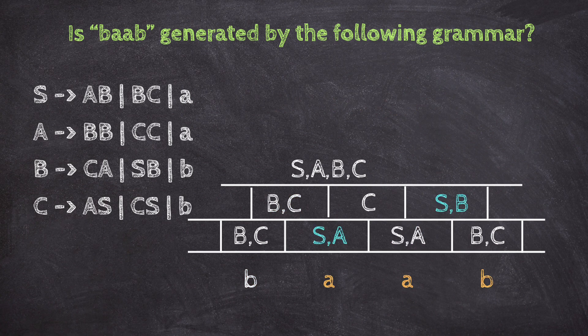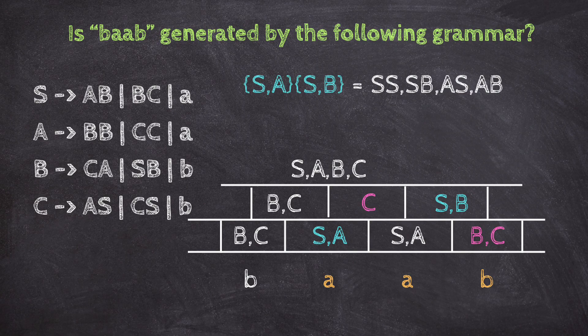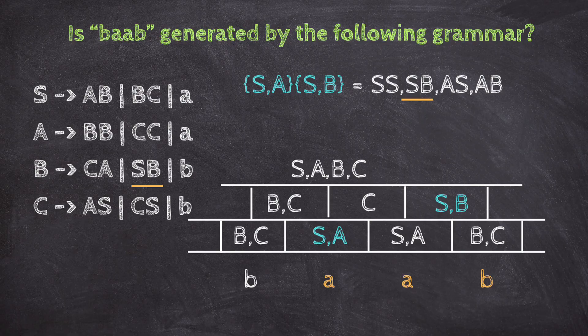For AAB, S, A from A, and B, S from AB. Pairs are SB, SS, AB, AS. B goes to SB, S goes to AB, C goes to AS. So above AAB, we write B, S, and C.